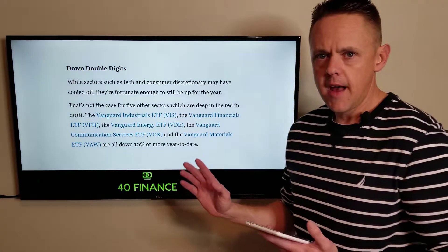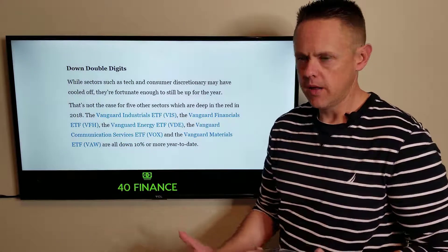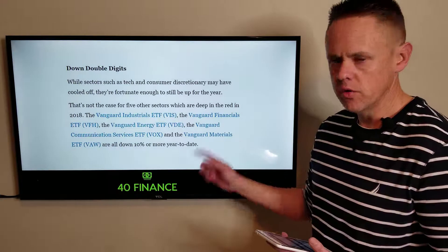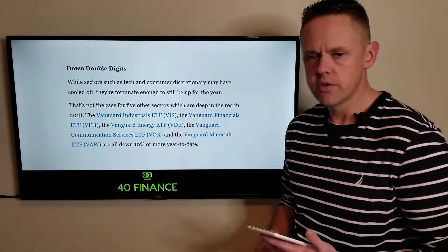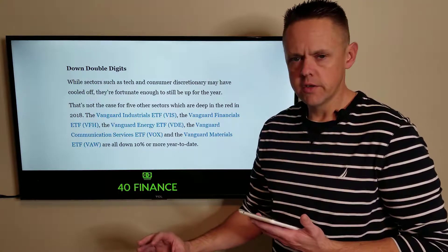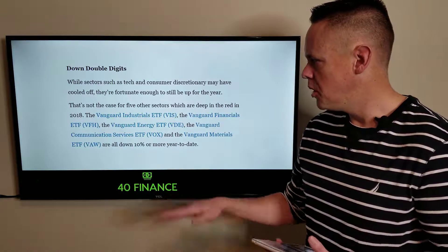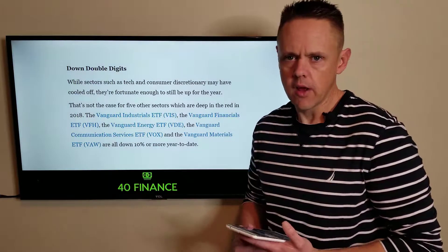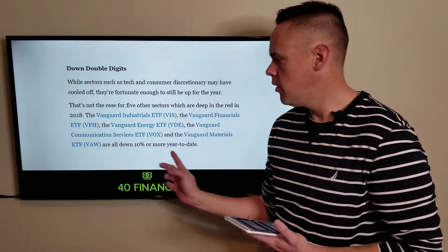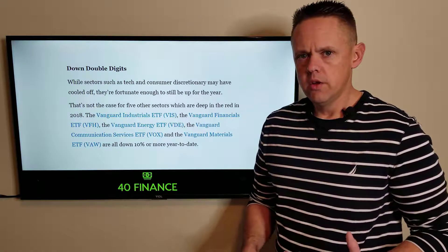Lastly, Summit looks at everything else that was down for the year. We had five up and six down. The ones that are deep in the red for 2018: industrials, financials, energy, and communication services, which is the bridge between telecom over to communication services. You can almost ignore that, but regardless, it's not like telecom grew in 2018. Materials are all down 10% or more year to date.